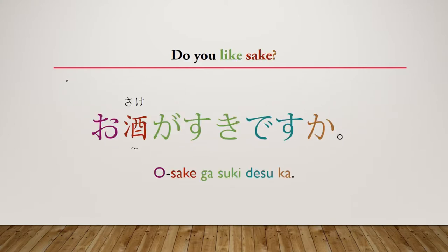The first example would be: do you like sake? As you can see here, we have our O before sake. There are certain words in Japanese that usually just have O before them, and sake is one of those words. Omiyage is another example. Omiyage indeed has the O before it. Technically it can just be miyage, but if you've ever studied Japanese vocabulary or listened to Japanese conversation, I can almost guarantee that you will not have heard miyage — you will always hear omiyage. O-sake is pretty much the same.